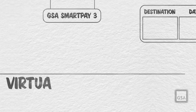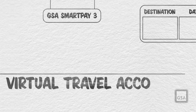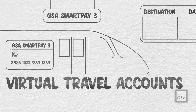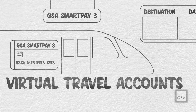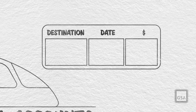Virtual travel accounts are picking up steam and gaining popularity everywhere. They're available to you as an option under GSA SmartPay 3. A virtual travel account is a unique account number created for a specific vendor for a limited time and a precise dollar amount.